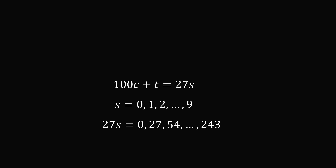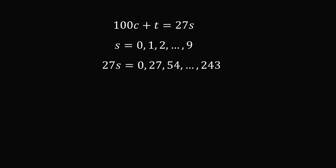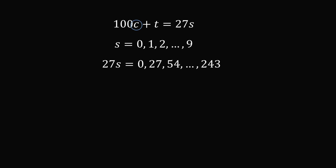Let's see how this information helps us solve the problem. Focusing on the value of C in 100 multiplied by C: since 27S ranges from 0 up to 243, the result is between 0 and less than 300. So C is either 0, 1 (some multiple in the 100s), or 2 (since we have 243).